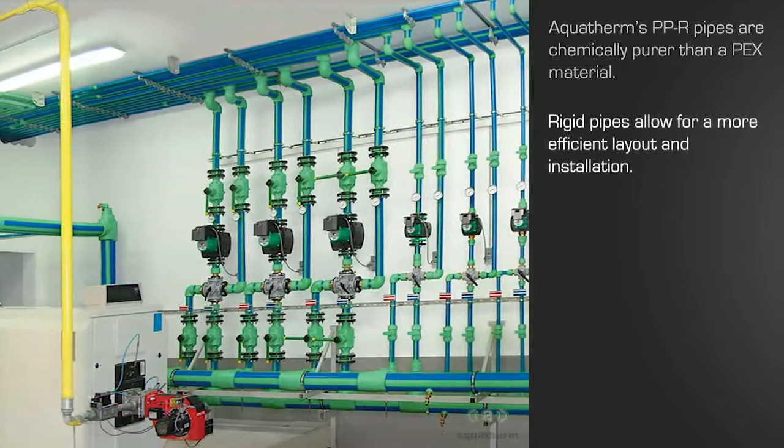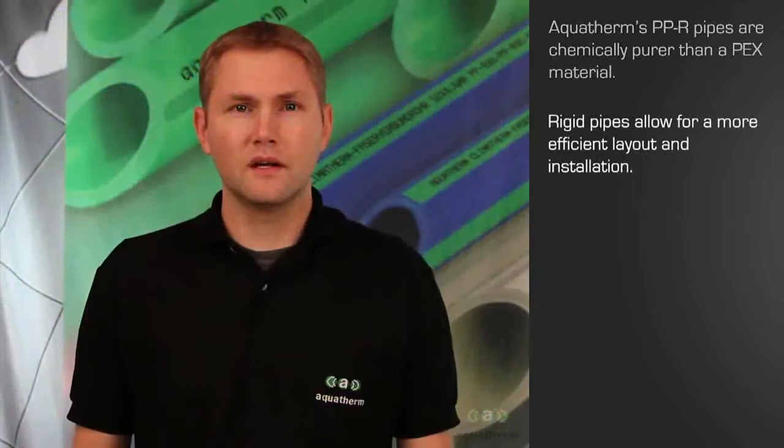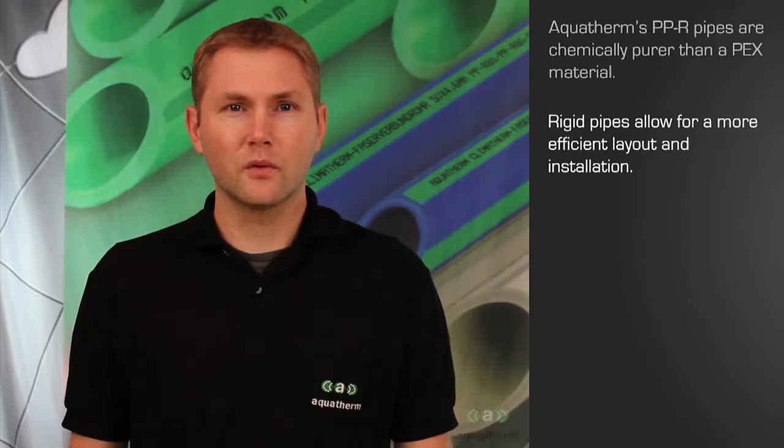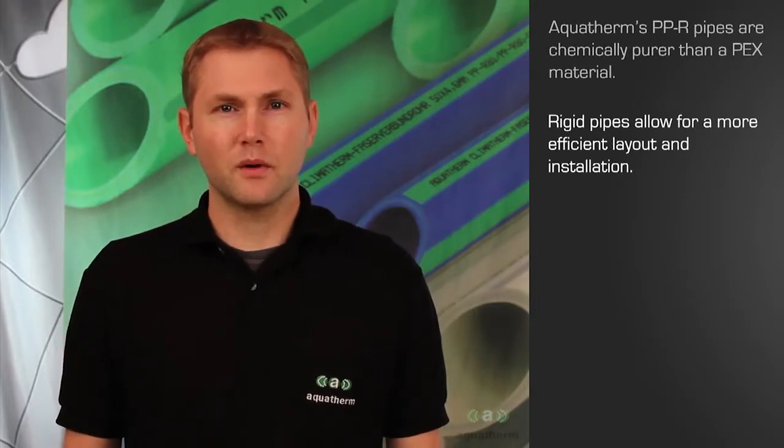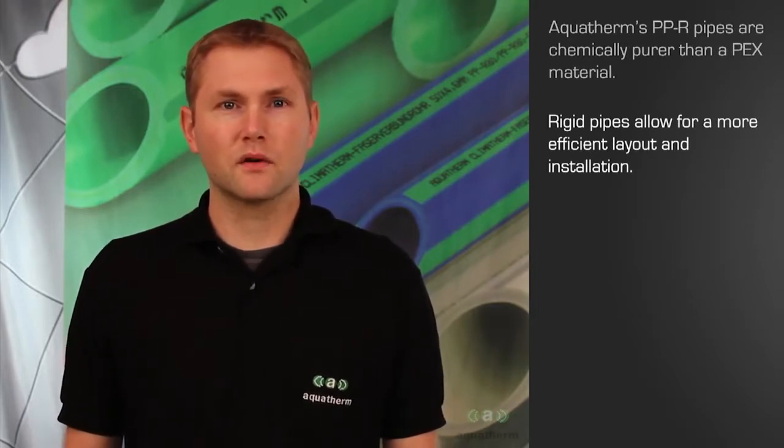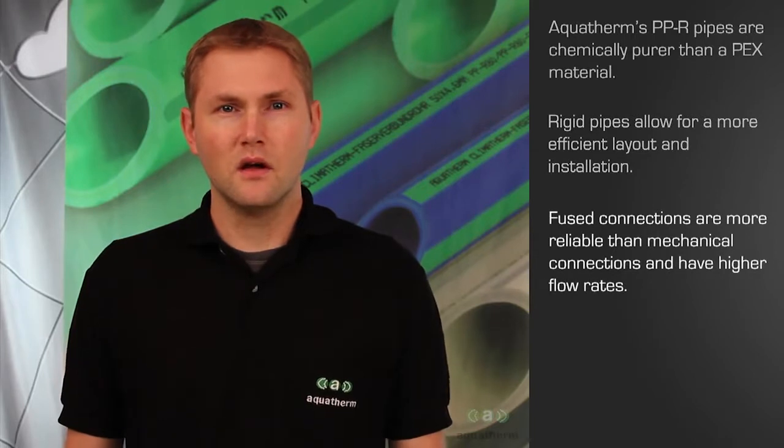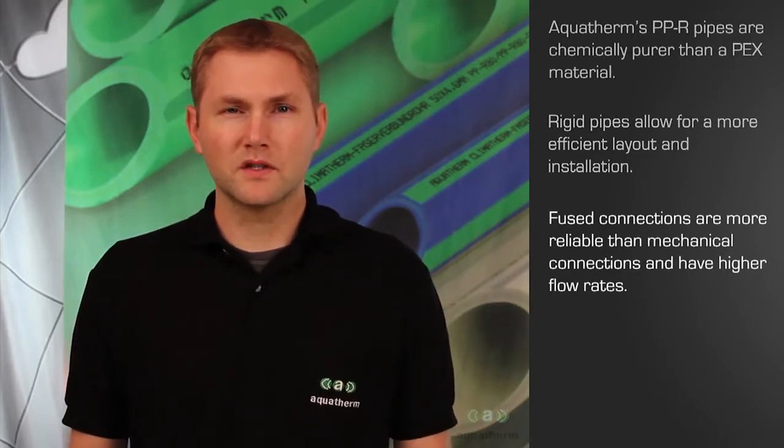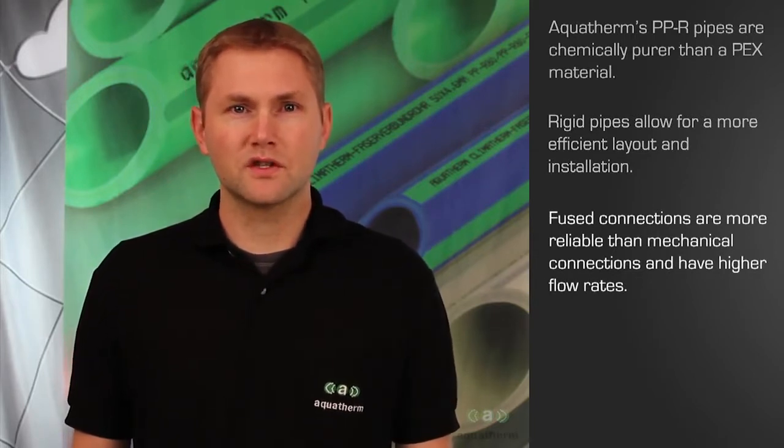Polypropylene also requires fewer supports. The other advantage deals with the connections and the flow rates. Rather than being crimped, polypropylene pipes are heat-fused for a more reliable connection. Polypropylene pipes have a much higher flow rate than PEX pipes with traditional crimped connections.